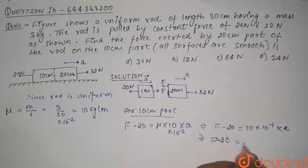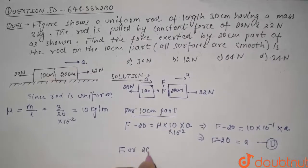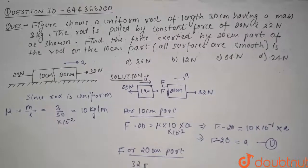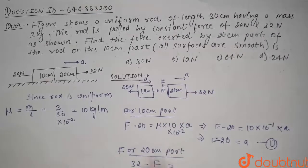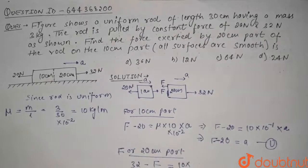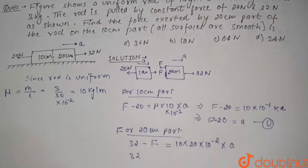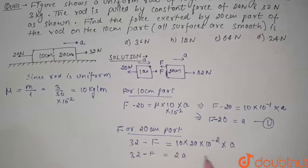For the 20 centimeter part, we write: 32 newton minus F equals mass times acceleration. Mass equals 10 kg/m into 20 centimeters, which in meters is 20 times 10 to the power minus 2, giving 2 kg. So 32 minus F equals 2a. This is our second equation.